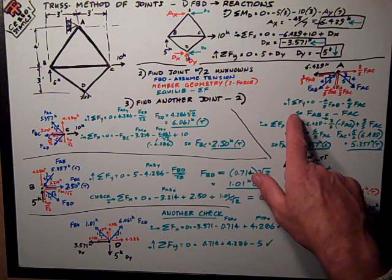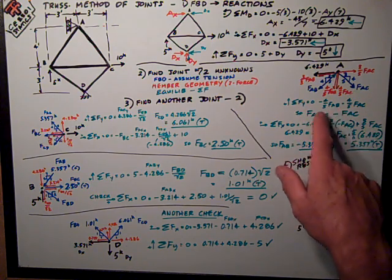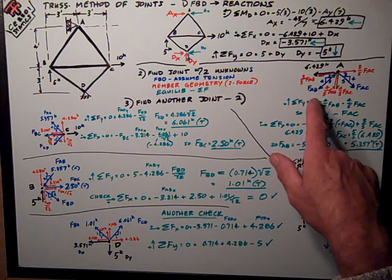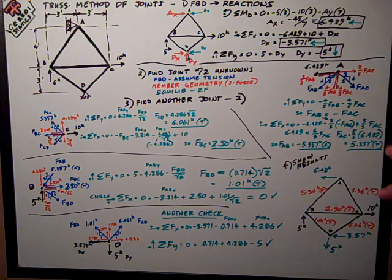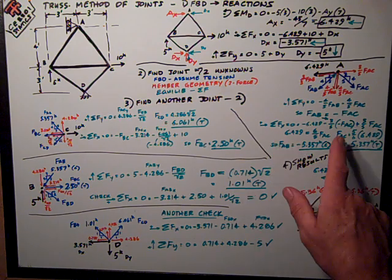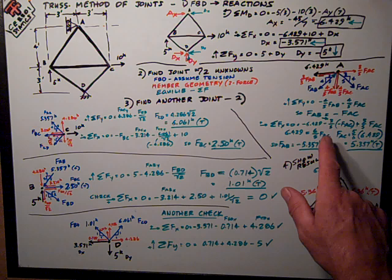And I can do sum of forces in the Y direction to show that the force in AB has got to be the negative of the force in AC. So one of them is tension, one of them is compression. I go to sum of forces in the X direction and do the math.